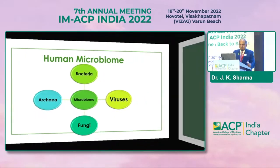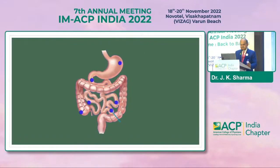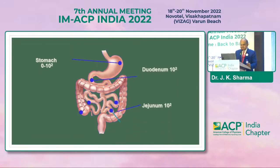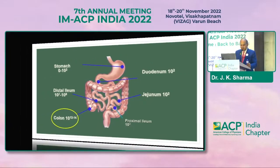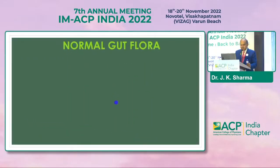The human microbiome comprises bacteria, archaea, viruses, and fungi. When we talk of the gastrointestinal tract, they are present in the stomach, duodenum, jejunum, distal ileum, proximal ileum, and the colon — but the maximum concentration is in the colon, at 10 to the power of 12 to 14.